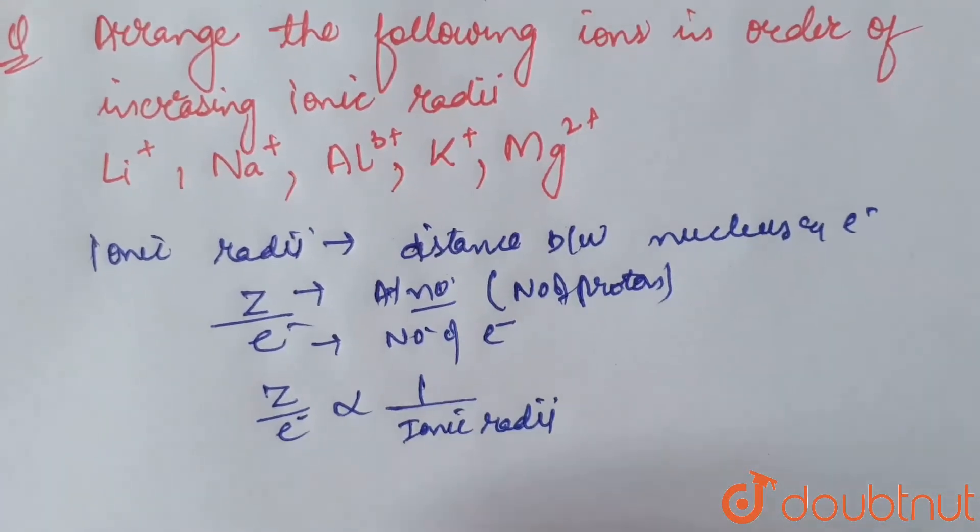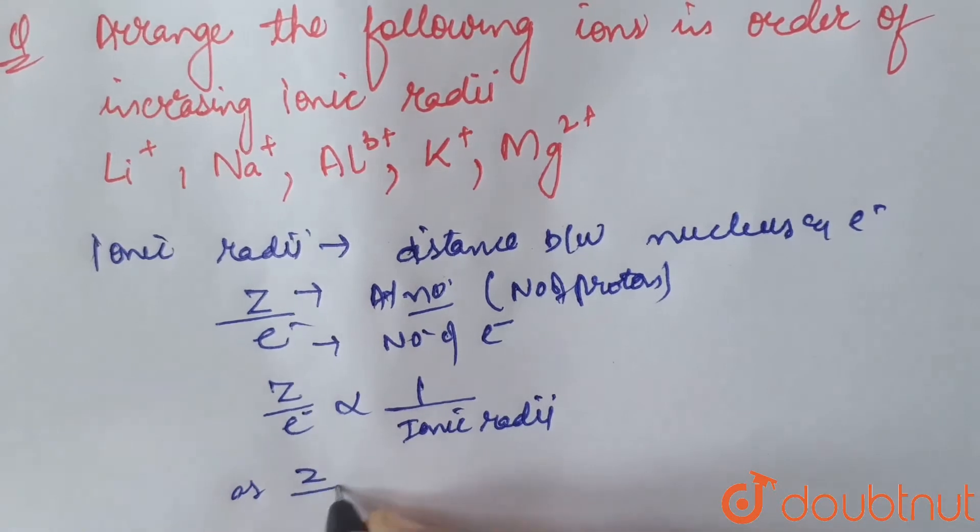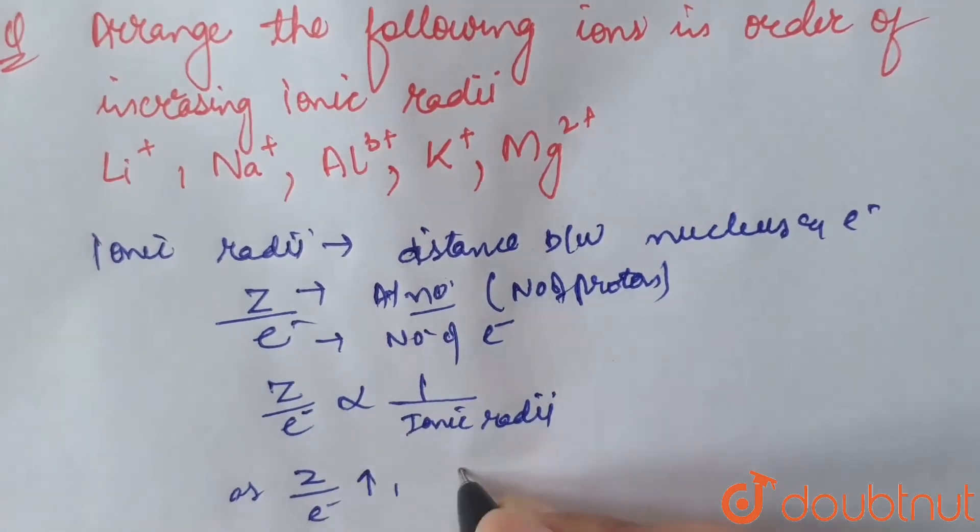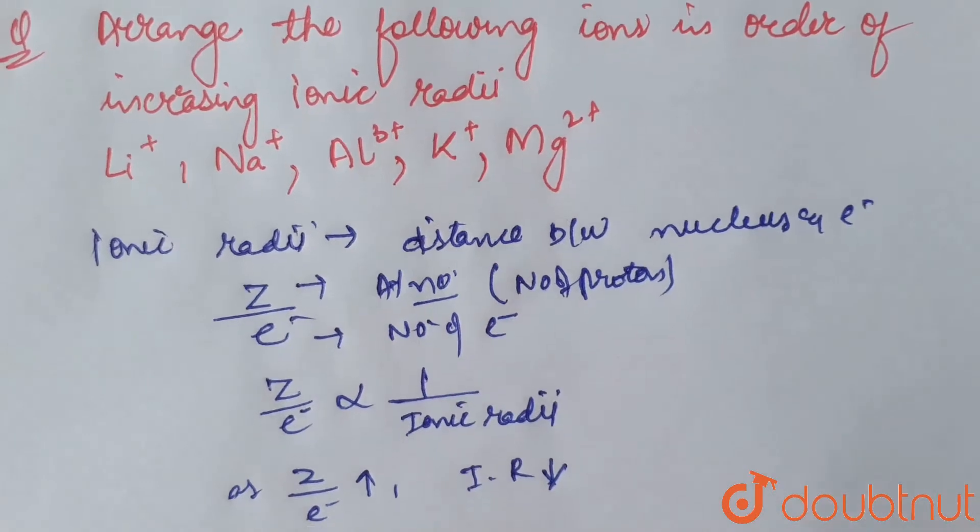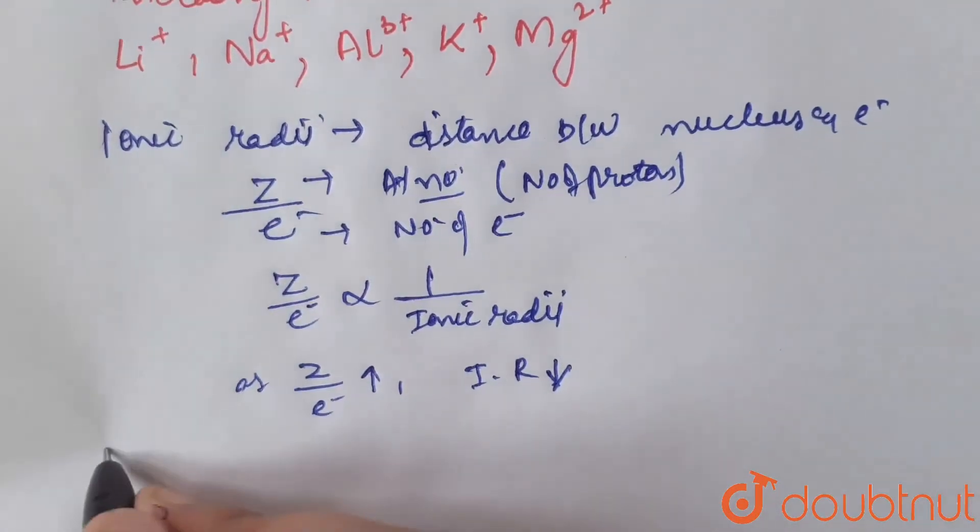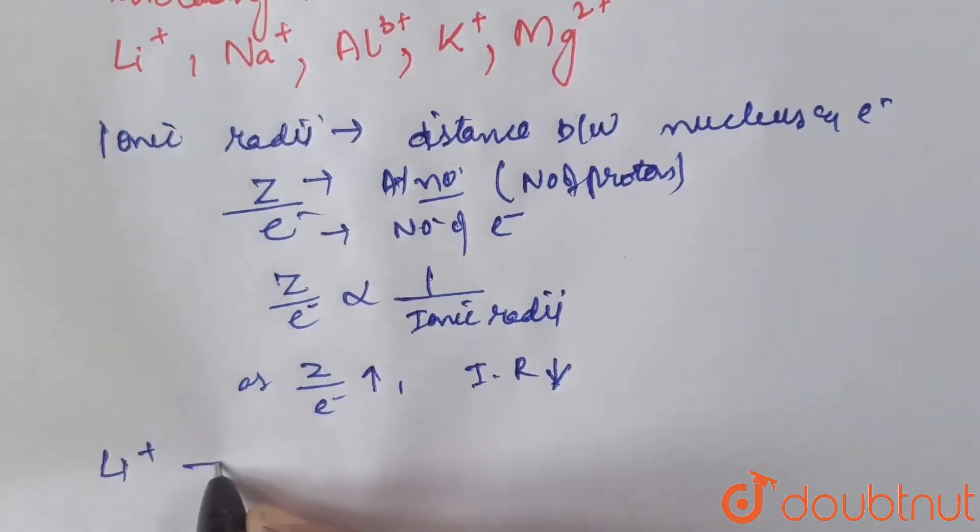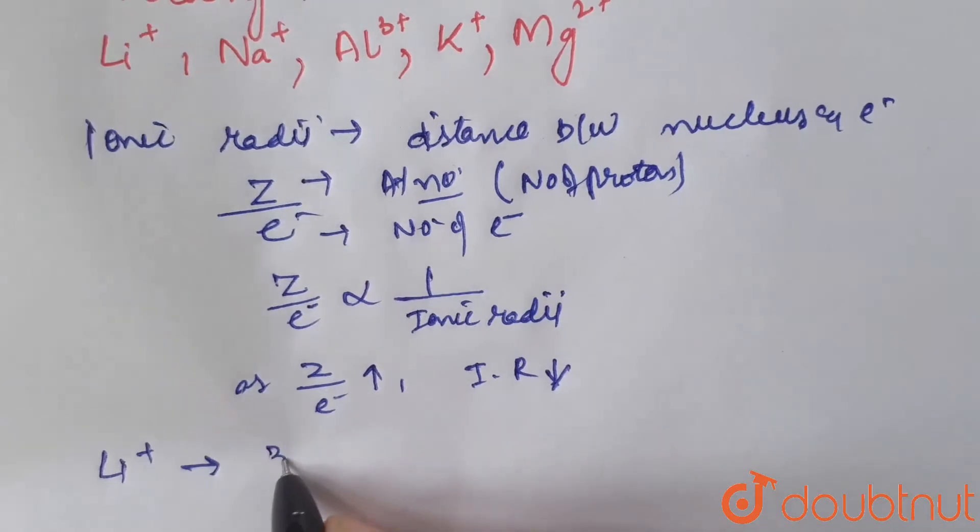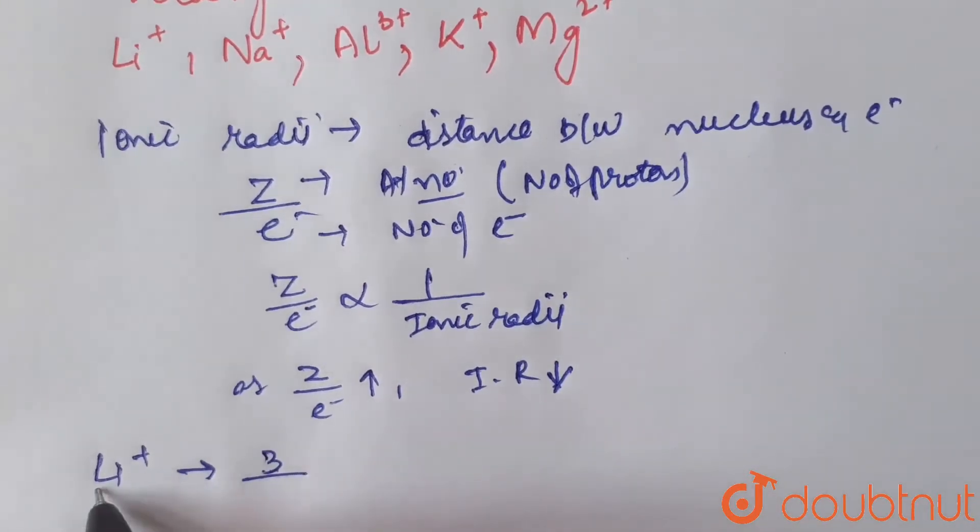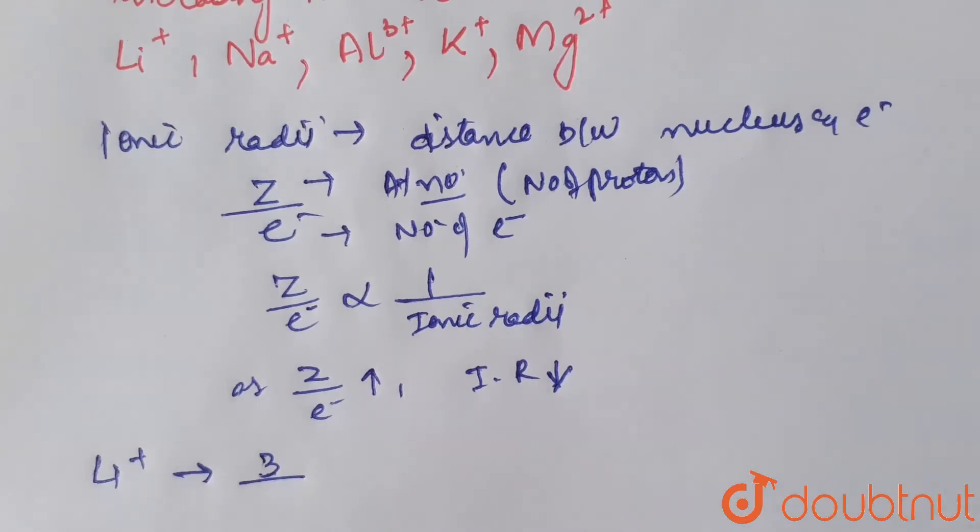That means as Z by e ratio increases, ionic radii decreases. Now, the given ions are lithium positive ions. Li+ has atomic number 3, and as it's Li+, the number of electrons are 2 since it has lost one electron. The ratio is 1.5.